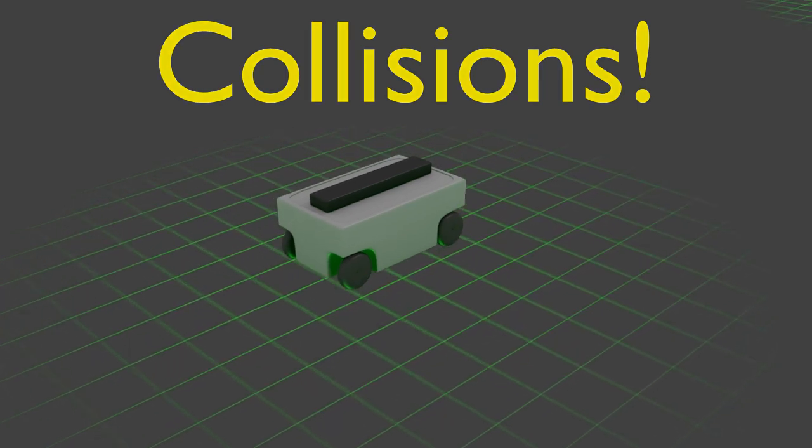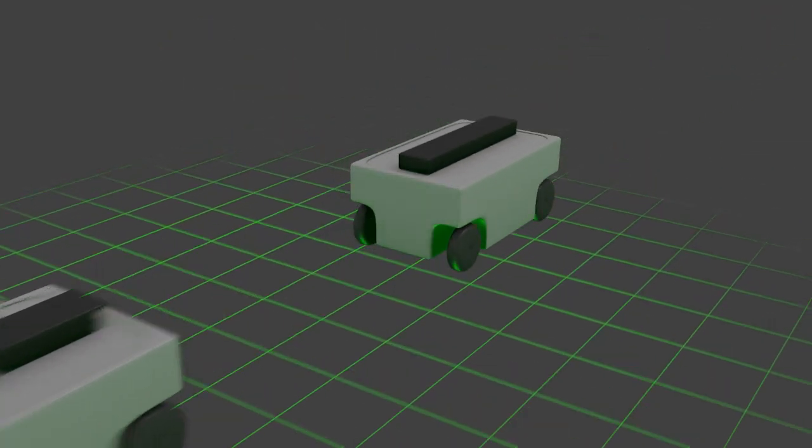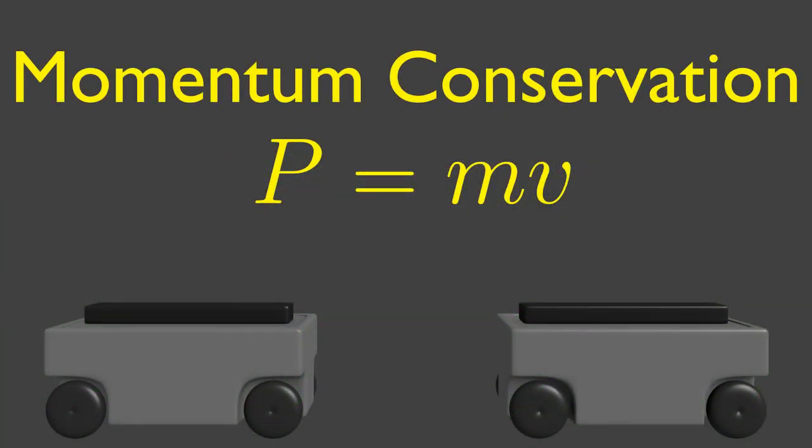We will be using rolling carts to demonstrate this. Momentum, defined as mass times velocity, is always conserved in collisions. The total before momentum is the same as the total after momentum.